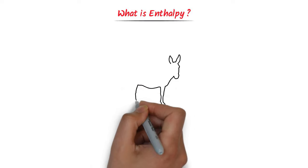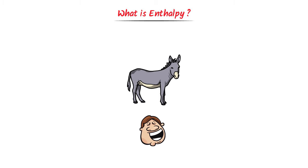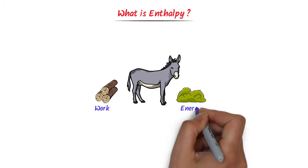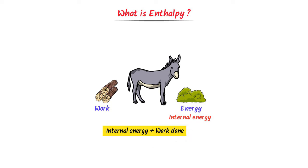Now, what is enthalpy? Consider this sir donkey — the poor animal who helps humanity. We know that sir donkey can only work for us if we give him some sort of food or energy. This food or energy is the internal energy of sir donkey. Using this internal energy, the animal can do different work. So there are two terms here: internal energy and work done. Sir donkey represents enthalpy, which contains both internal energy and has the ability to do some sort of work.